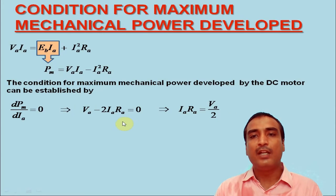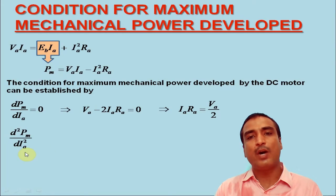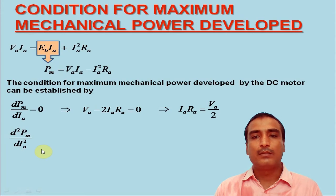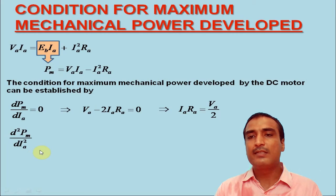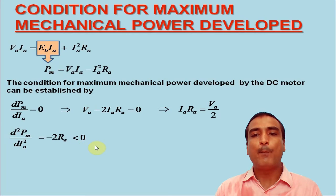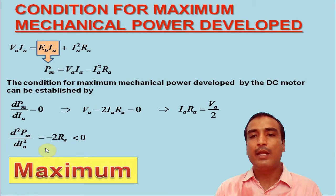However, it is worth noticeable that exploring a point, whether it is a maximum or minimum, can be established by means of the second order derivative. Therefore, we have to determine the second order derivative of PM with respect to armature current IA. The second order derivative of PM with respect to IA is calculated as minus 2 RA, which clearly is negative. Thus, power maximum is concluded here.